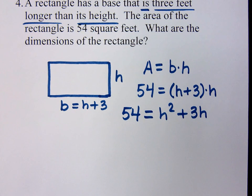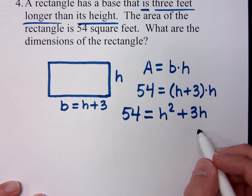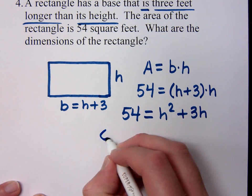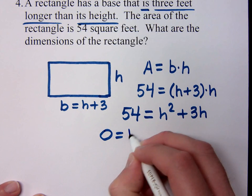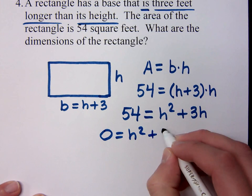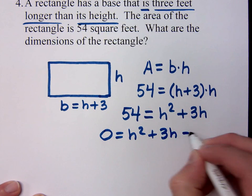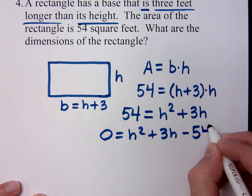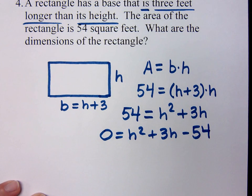So what's going to be the way I'm going to get zero on one side? What's the best way to do this? Take 54 to the other side. Move 54 to the other side. So when I do that, I've got zero is equal to H squared plus 3H minus 54. It equals zero, so now I need to do what? Factor.